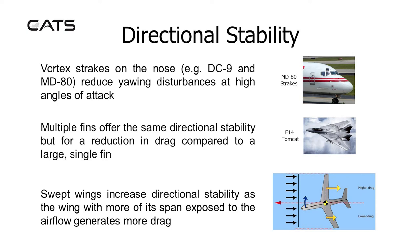However, there has to be a compromise because if the fin is too big, this will create more zero-lift drag or profile drag. One way of getting round this is to have multiple smaller fins, like in the F-14 Tomcat. Swept wings increase directional stability as the wing with more of its span exposed to the airflow generates more drag.